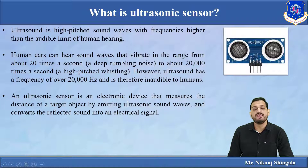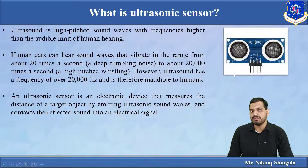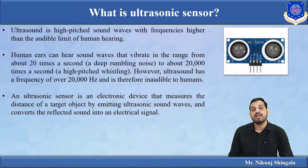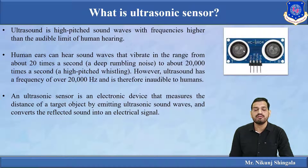The HC-SR04 ultrasonic sensor is an electronic device that measures the distance of a target object by emitting ultrasonic sound waves and converts the reflected sound into an electric signal. It consists of a transmitter and a receiver. The transmitter generates a wave that is incident on the object and reflected back, then received by the receiver. The duration of the sound travel is measured, and based on that duration, the distance can be calculated because we know the speed of sound in air.